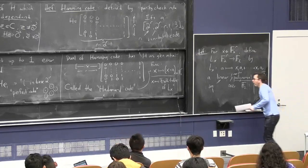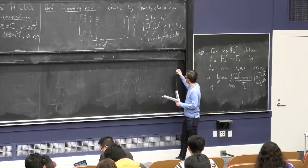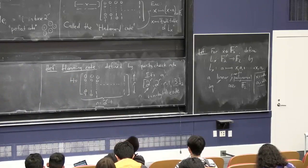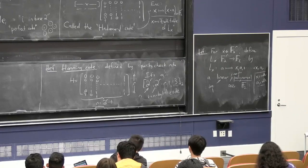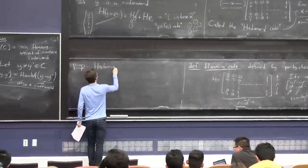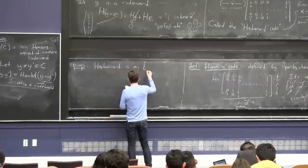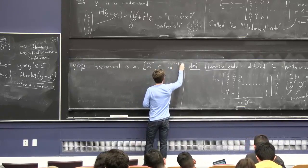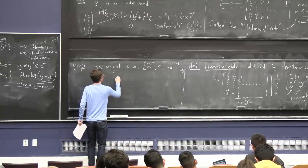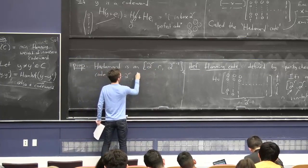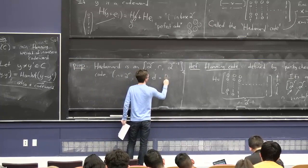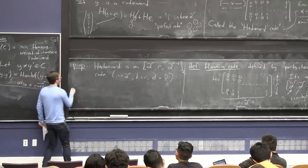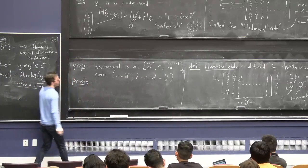Great. So let's see the properties of this code. So Hadamard is 2 to the r, r, and the distance is 2 to the r minus 1. So n equals 2 to the r, k equals r, and the distance is like n over 2. So the minimum distance is like half of all the bits.